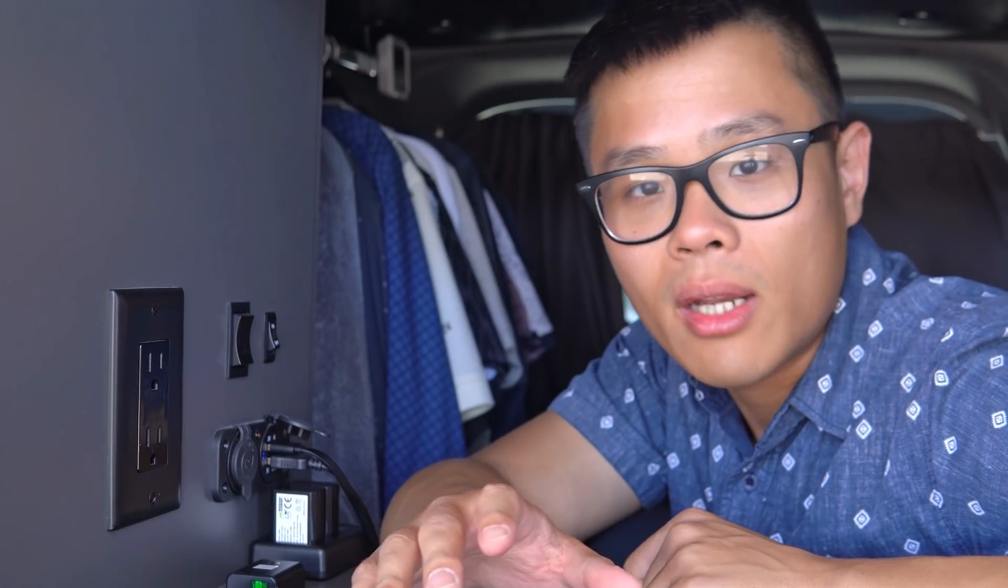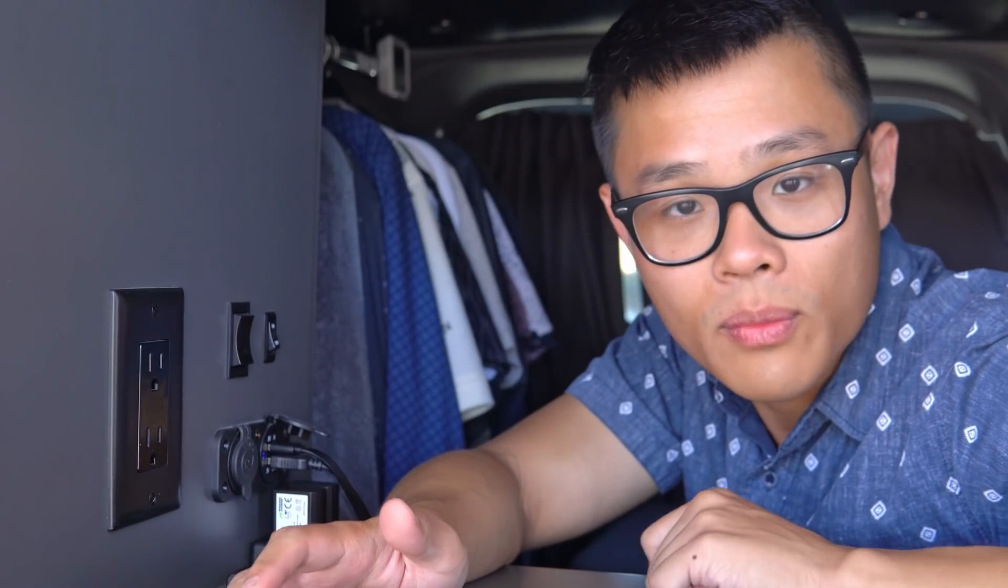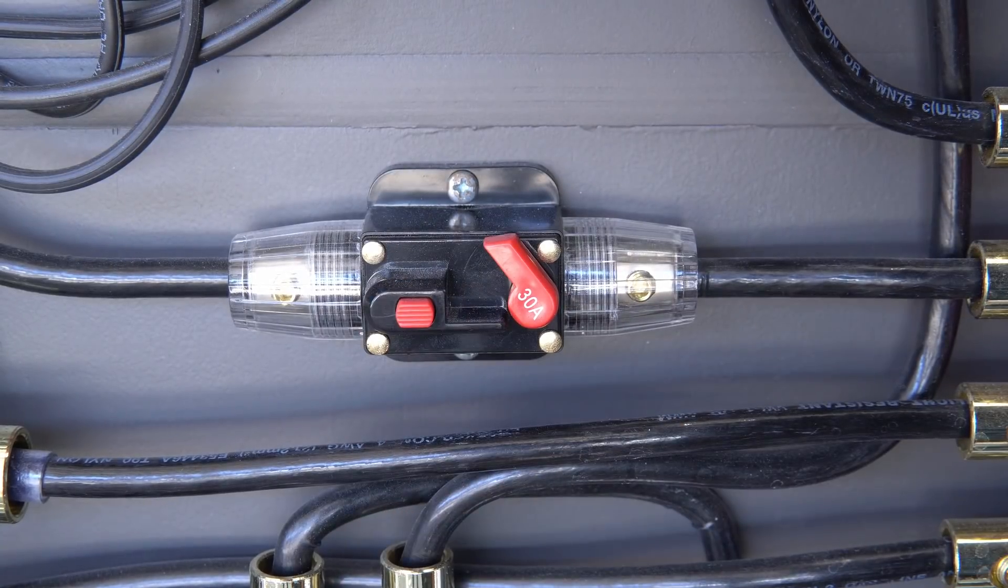For AC, you can use a distribution panel that uses breakers instead of fuses. Breakers serve the same function as fuses, which is to protect your electronics from overloading or short circuiting. Fuses are cheap and need to be replaced if they blow and breakers can be reset mechanically if they trip.